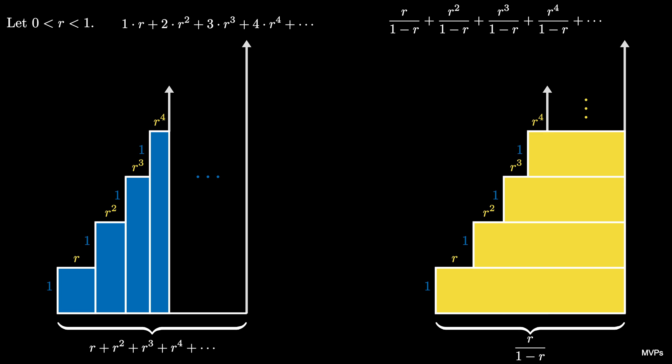These two infinite sums can be shown to both converge to a finite value because r is between 0 and 1. The sums enclose the same area so they must be equal.